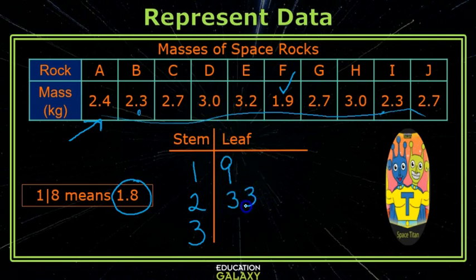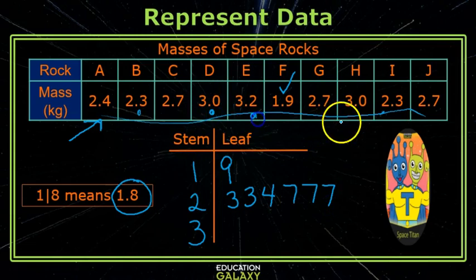I must list a 3 for every one, then a 2.4, and three 2.7s. So you have a leaf for every data value. On my 3s, I have two 3.0s, so I must list two 0s and a 3.2.